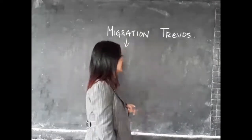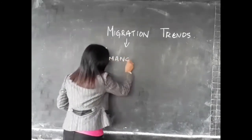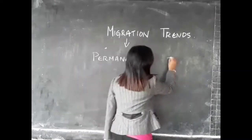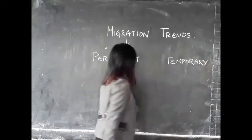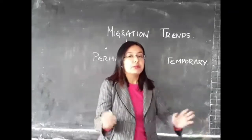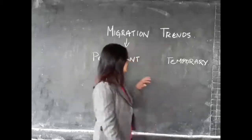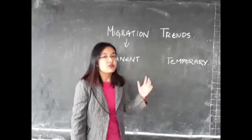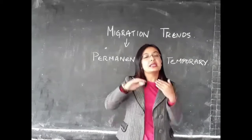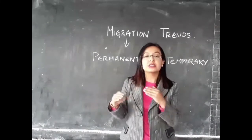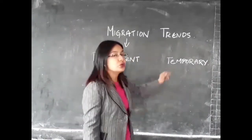When we talk about migration, it can either be permanent or temporary. So what is permanent migration? When people migrate from one place to another on a permanent basis, that is considered as permanent migration. For example, when a woman gets married, she leaves her home permanently and goes to live in her in-laws' house. Since she is leaving her home permanently, it is considered as permanent migration.